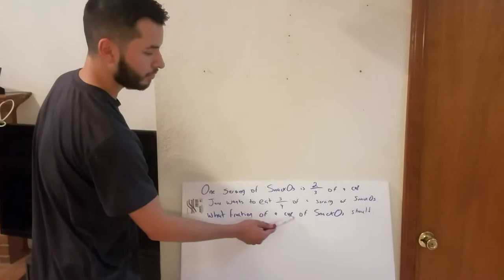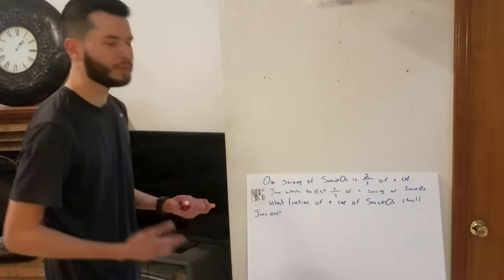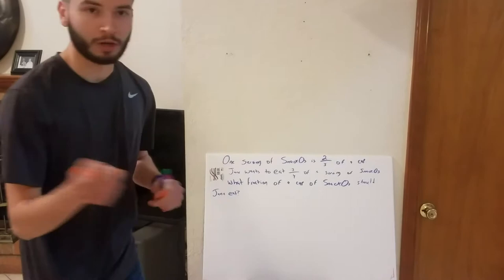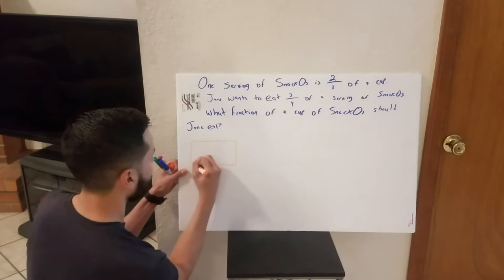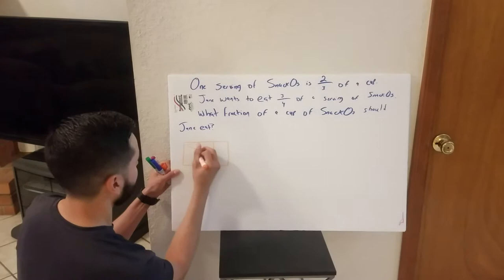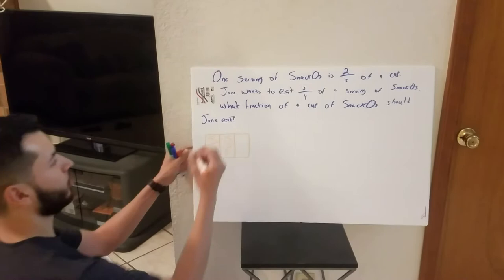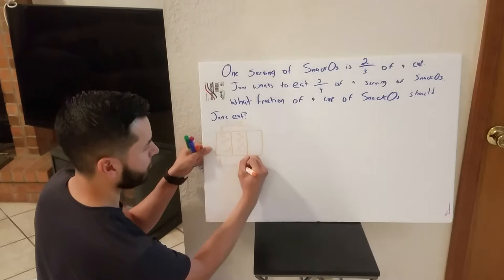Let's go ahead and start this problem by reading the first sentence to see what it's saying. One serving of snackos is two-thirds of a cup. So our whole is a cup. Let's go ahead and draw that. That's one cup, and one serving is two-thirds of a cup. So we know our whole right here is one cup, and the two-thirds of a cup is one serving.